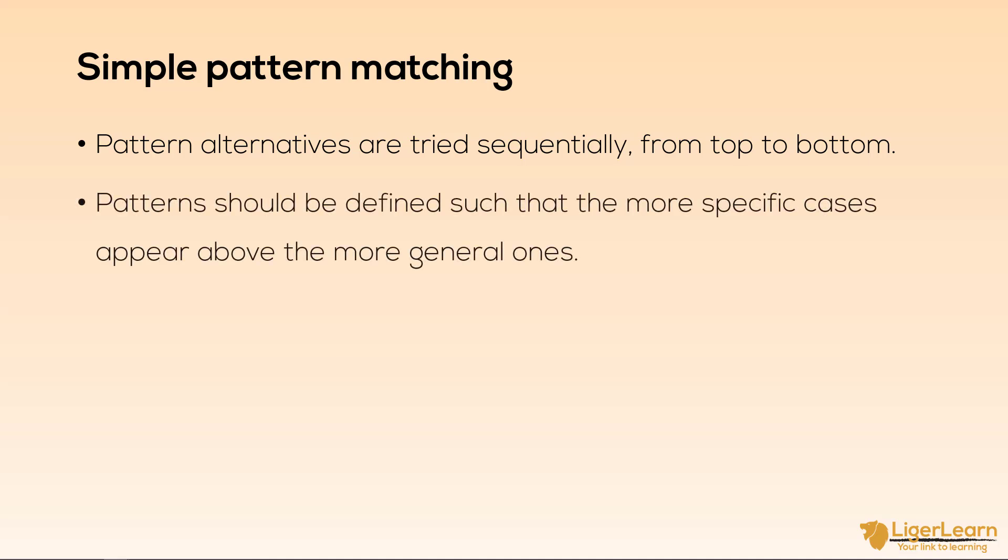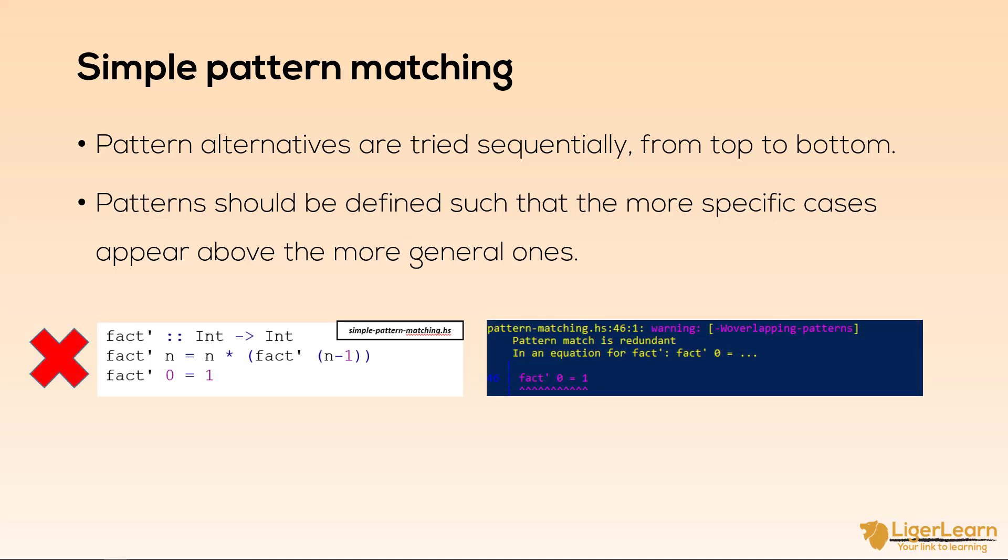Suppose we were to define our factorial function like so. We've called our function fact followed by an apostrophe. This is somewhat common in certain styles of older Haskell and we pronounce it as fact prime. So we define fact prime such that the more general pattern is above the more specific one.